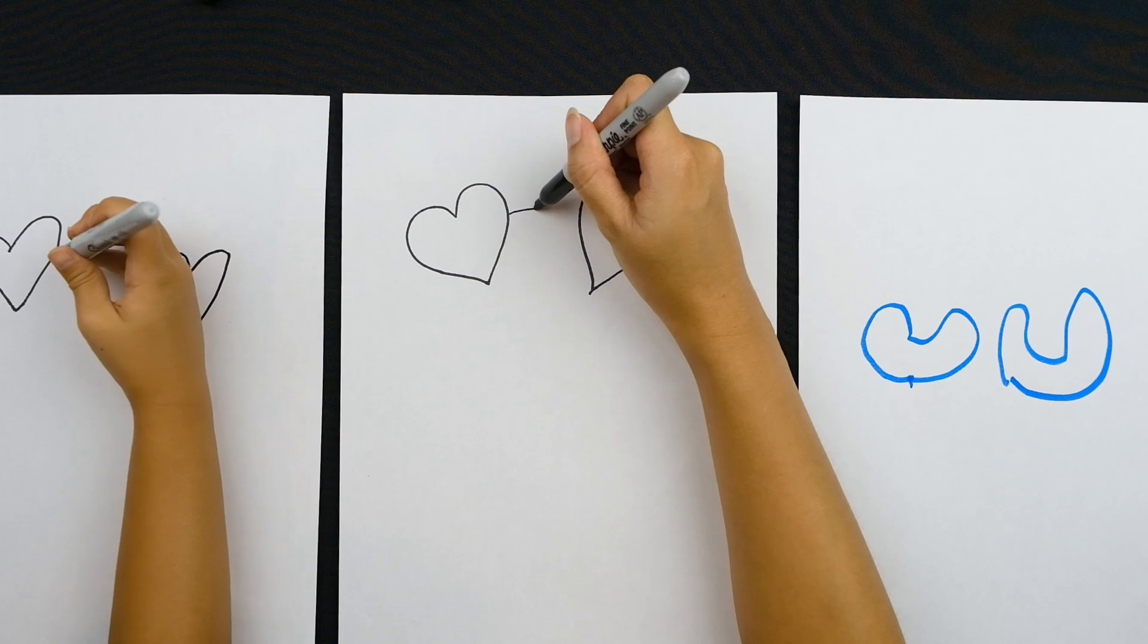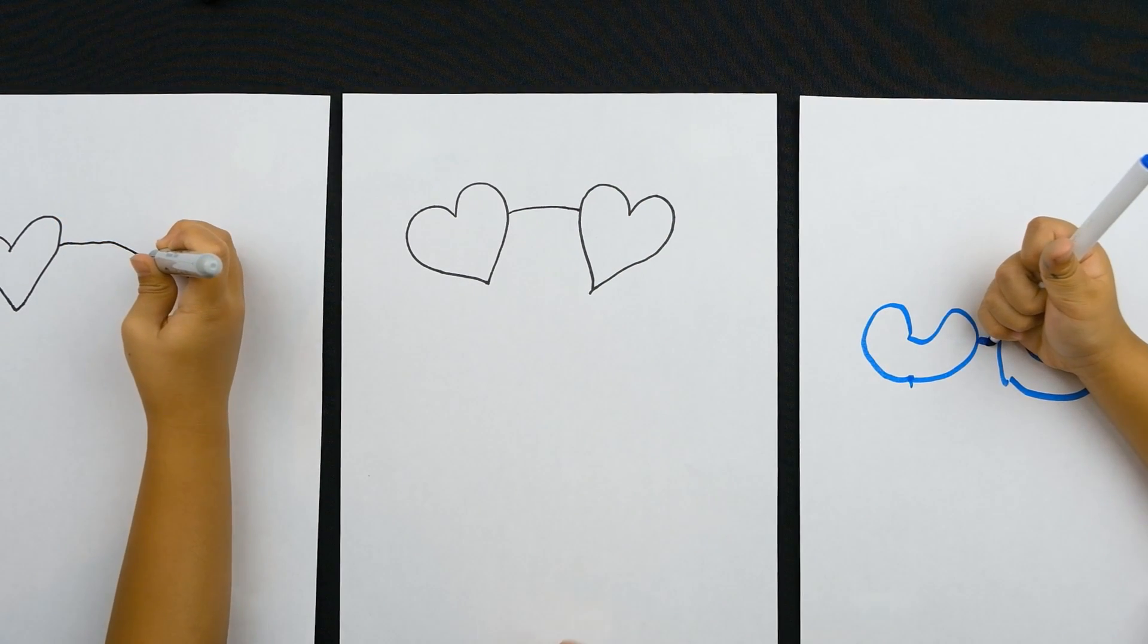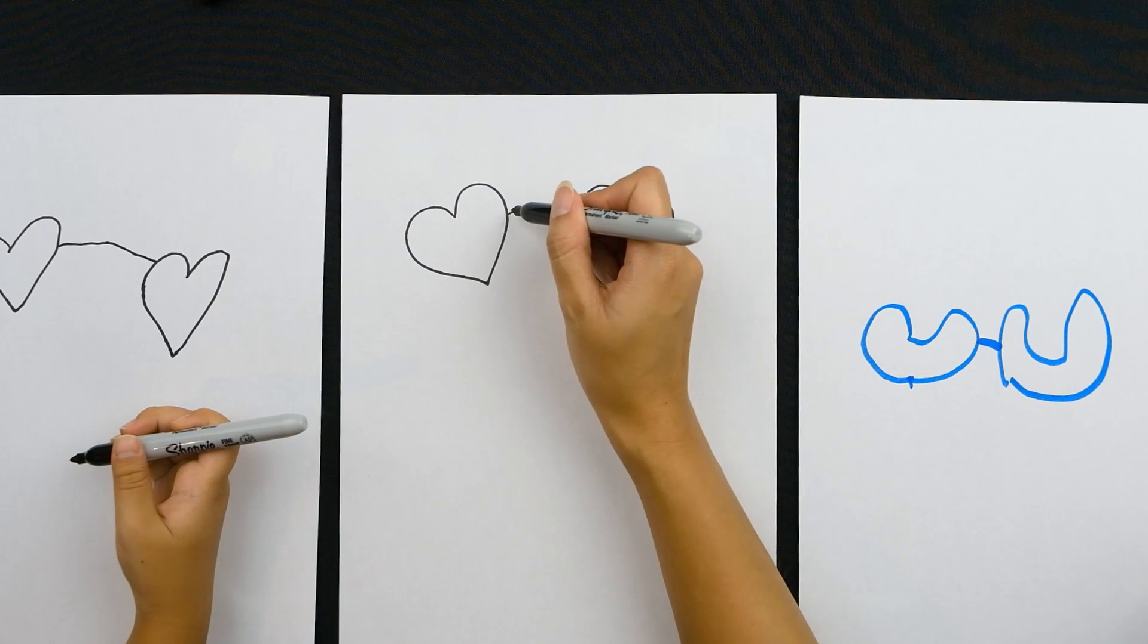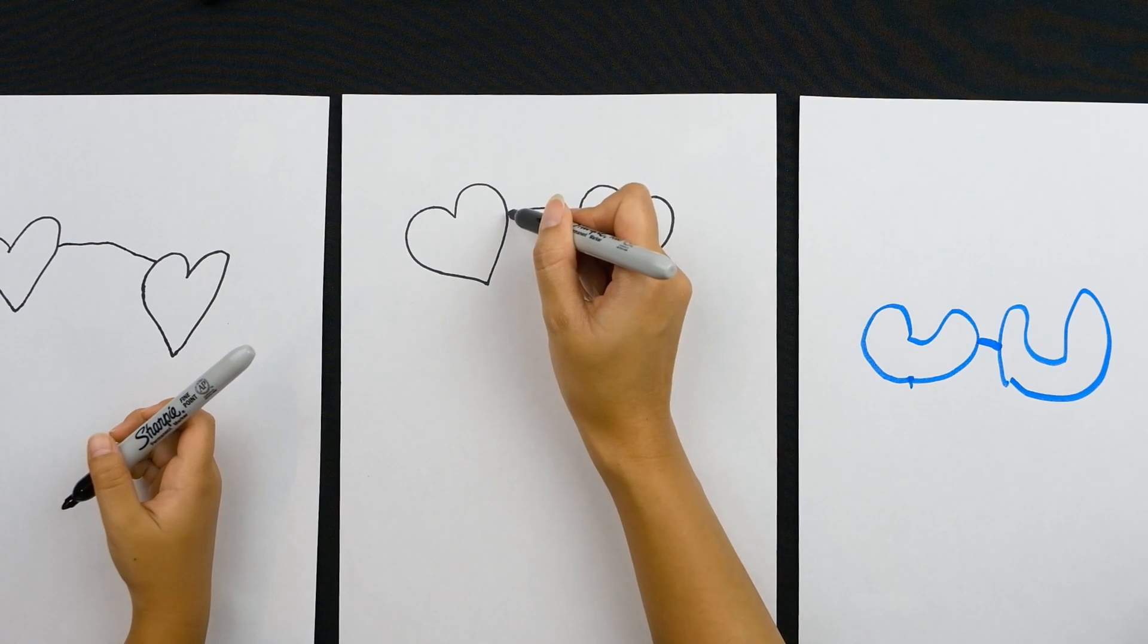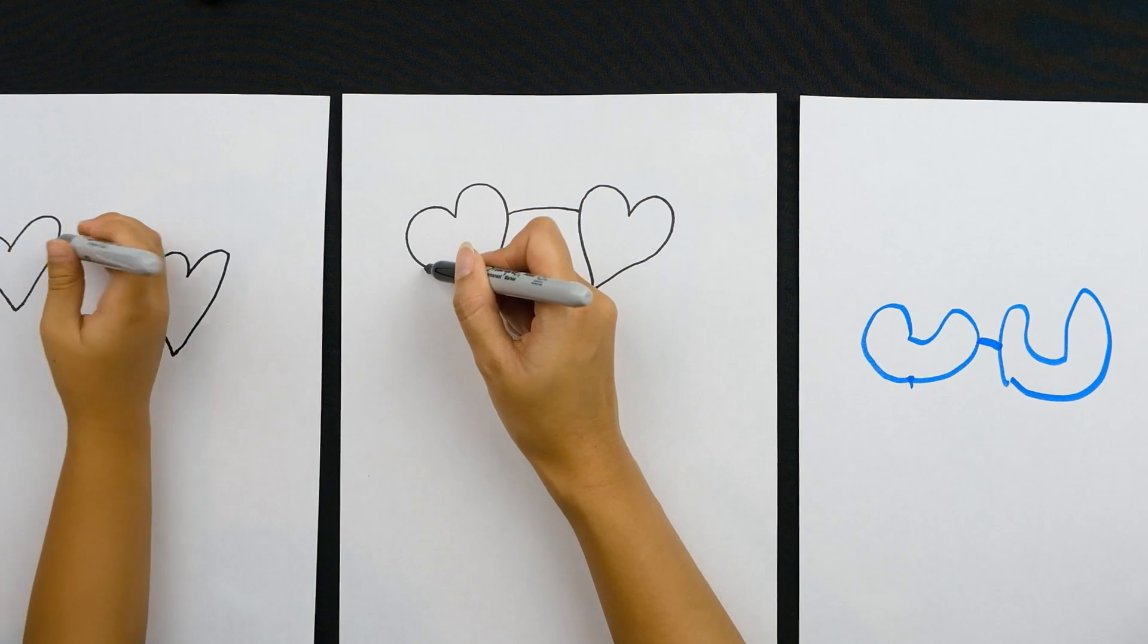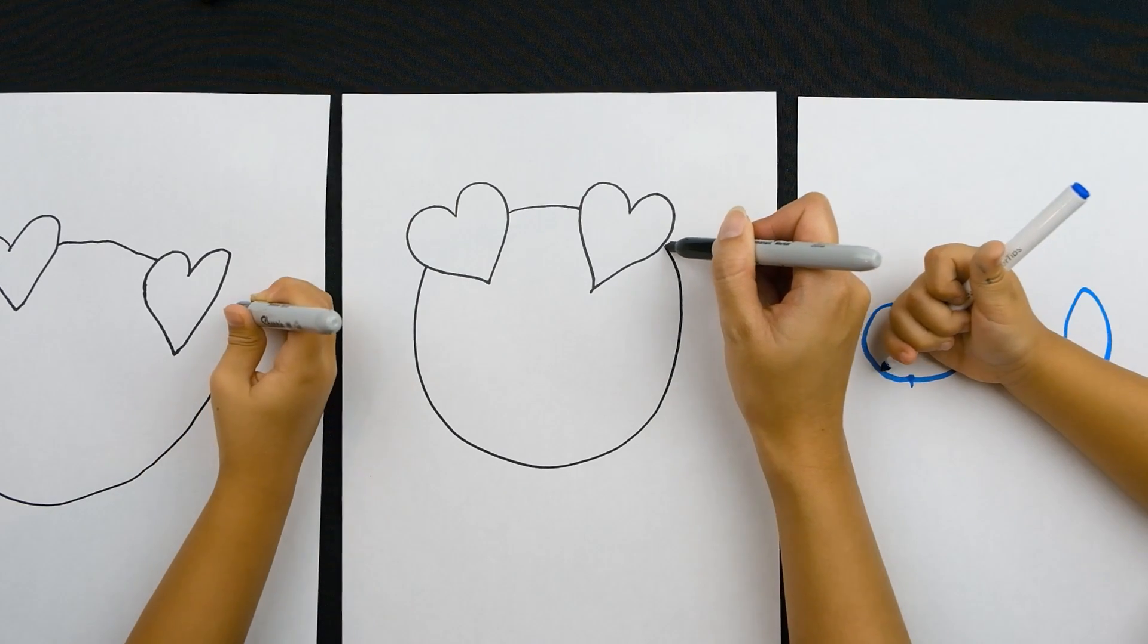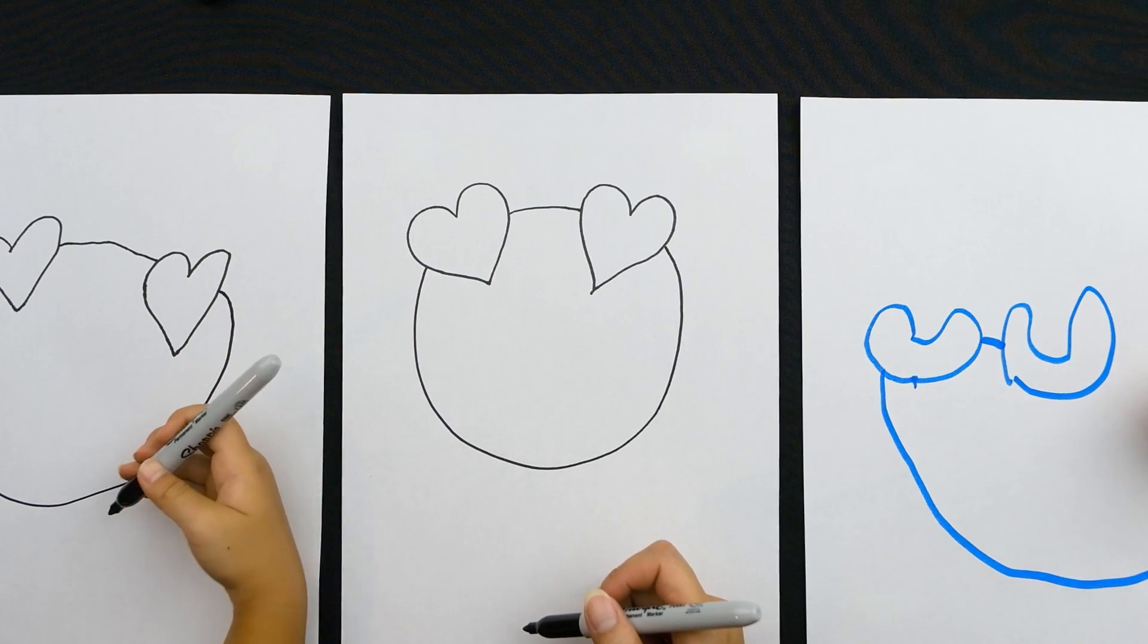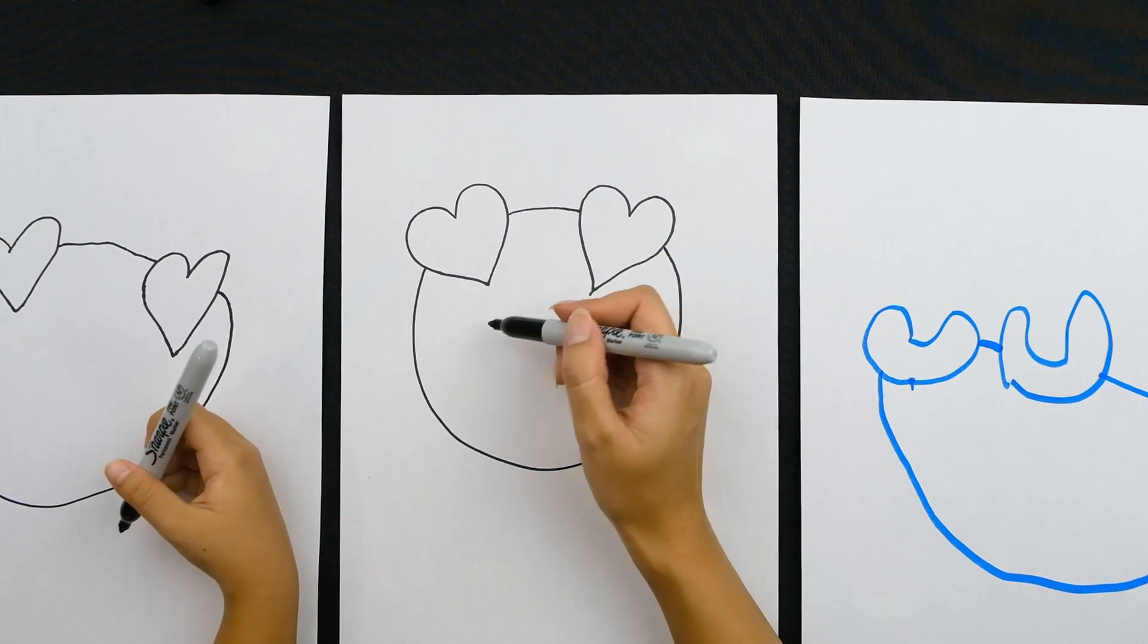And draw the head. And then, we're going to try to freehand a circle. Okay, guys? Now, we're going to draw the mouth. Smiling.